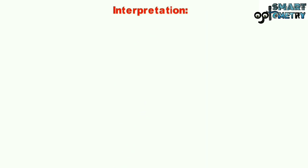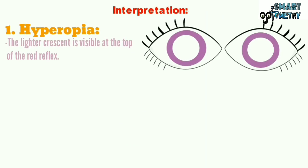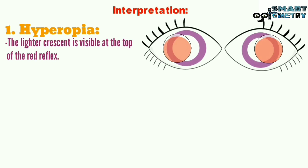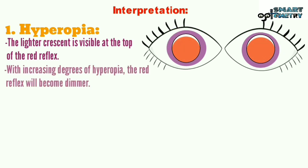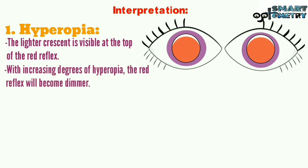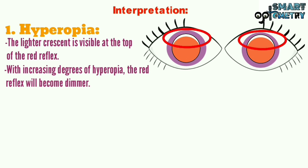Interpretation of the Bruckner test. 1. Hyperopia: The lightened crescent is visible at the top of the red reflex. With increasing degree of hyperopia, the red reflex will become dimmer.